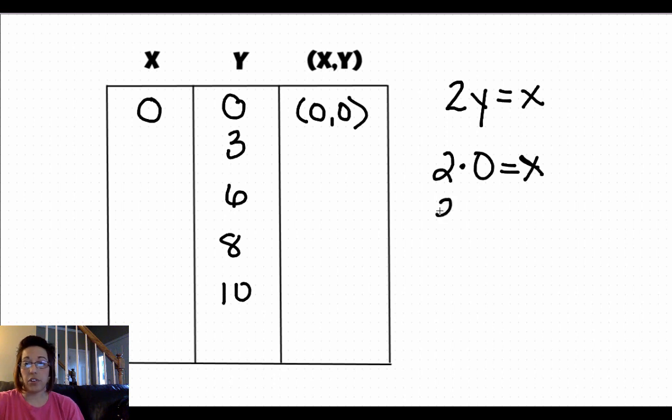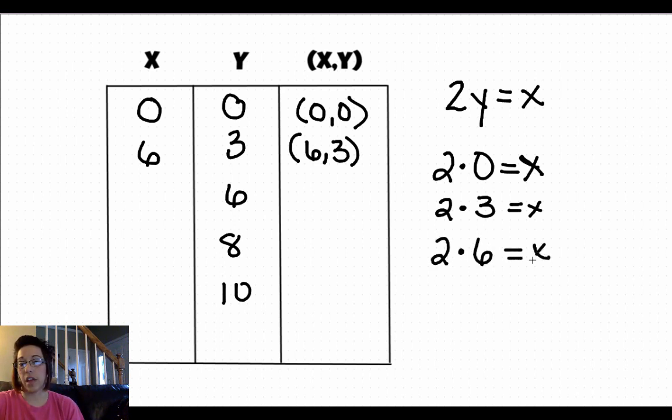2 times the value for y, which is 3, equals x. 2 times 3 is 6. 6 comma 3 becomes our ordered pair. 2 times 6 equals x. 2 times 6 is 12. So our ordered pair becomes 12, 6.